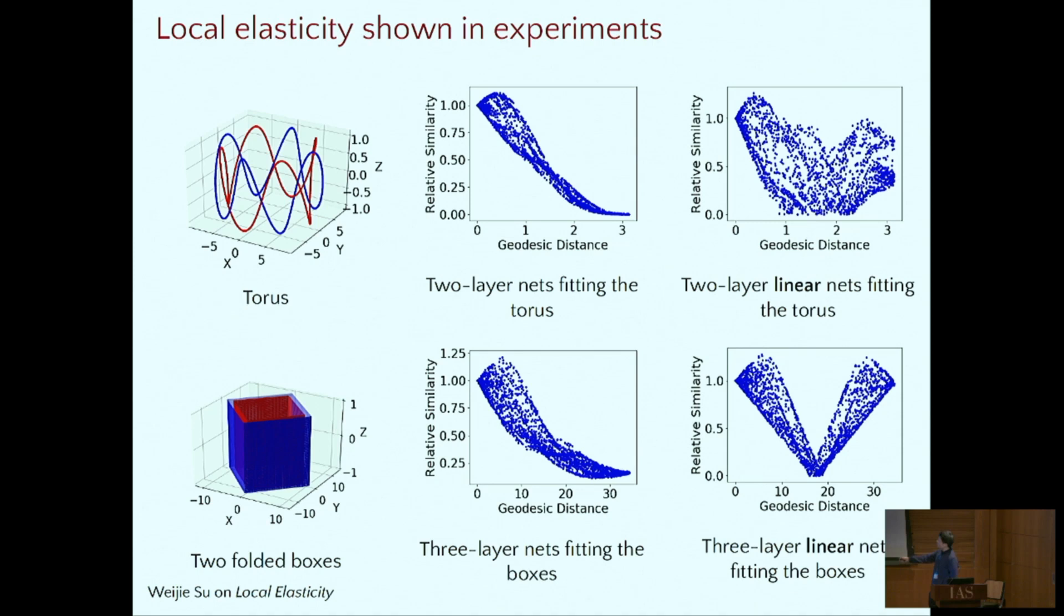We do more simulations, and all the simulations confirm our local elasticity hypothesis. There are some curves on a torus, and this is two boxes. Here, the geodesic distance is the distance between two points on the blue curve. This is a relative similarity defined earlier. Roughly speaking, we see that for deep learning with ReLU activation, if the distance is far away, the change will get smaller. Which is not the case if the network is a linear classifier where the activation is identity. We don't see such phenomena in linear classifiers.